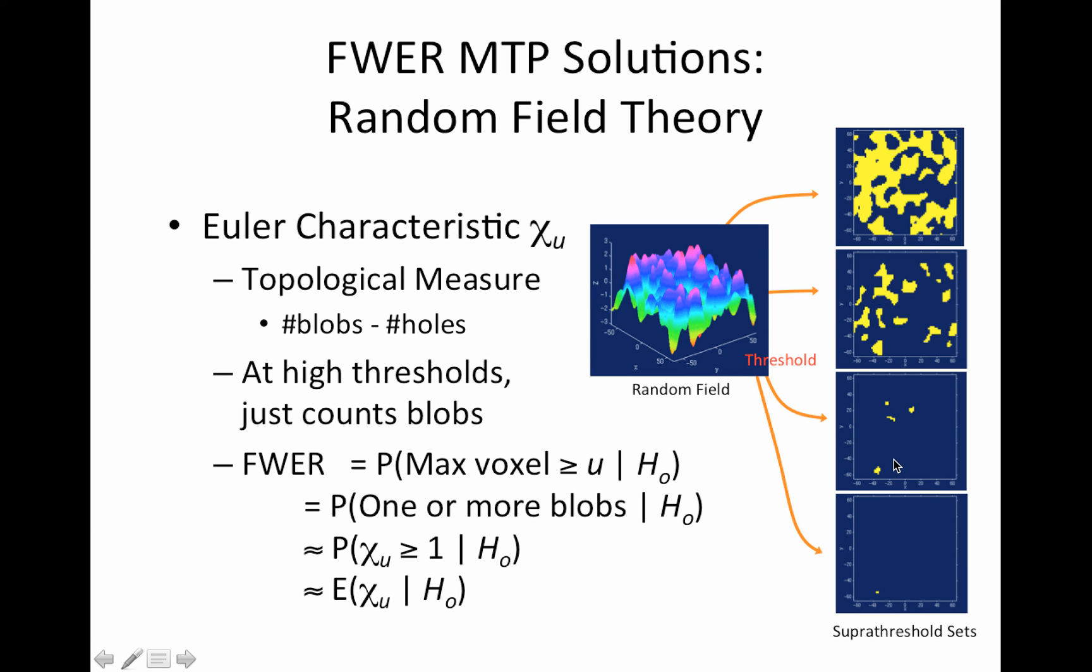And you can imagine if we apply some threshold and only look at the voxels that are surviving the threshold, you'll get these various images I'm showing on the right. So these are the supra threshold sets. If I have a really high threshold, I just have one blob, lower it a little bit, now I have three little blobs, lower it a little more, and I have even more blobs.